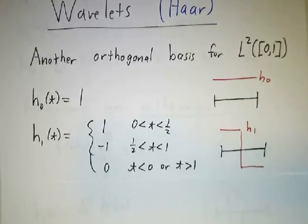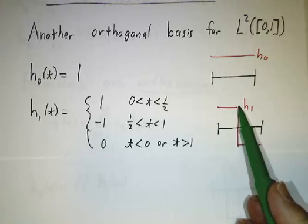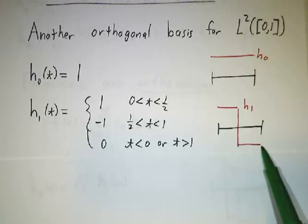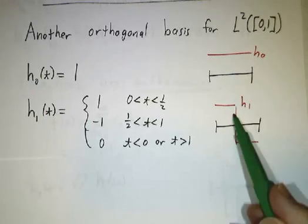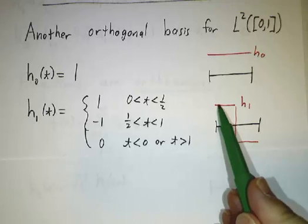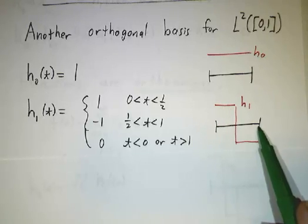Our next function is going to be a square wave. It's going to be 1 between 0 and 0.5 and negative 1 between 0.5 and 1. These guys are orthogonal because if you multiply them together and you integrate, you're integrating 1 from 0 to 0.5 and negative 1 from 0.5 to 1, and that adds up to 0.